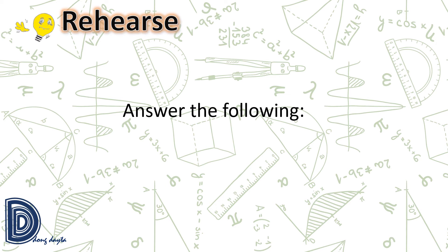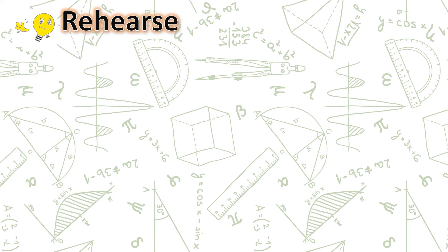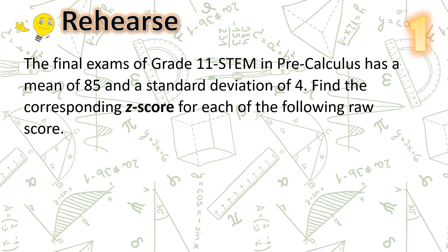Let us have some practice exercises. You will be given 15 seconds to answer each problem. You may pause the video if you need more time and play it again to check your answer. Practice Exercise No. 1: the final exams of Grade 11 STEM in pre-calculus has a mean of 85 and a standard deviation of 4. Find the corresponding z-score for each raw score: (A) 82, (B) 76, (C) 93.